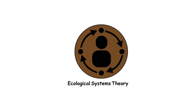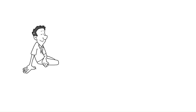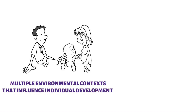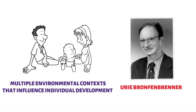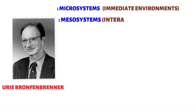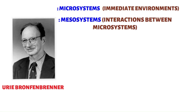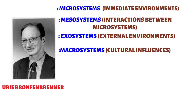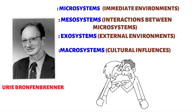Ecological Systems Theory focuses on the multiple environmental contexts that influence individual development. Urie Bronfenbrenner identified microsystems (immediate environments), mesosystems (interactions between microsystems), exosystems (external environments), and macrosystems (cultural influences) as key factors shaping personality and behavior.